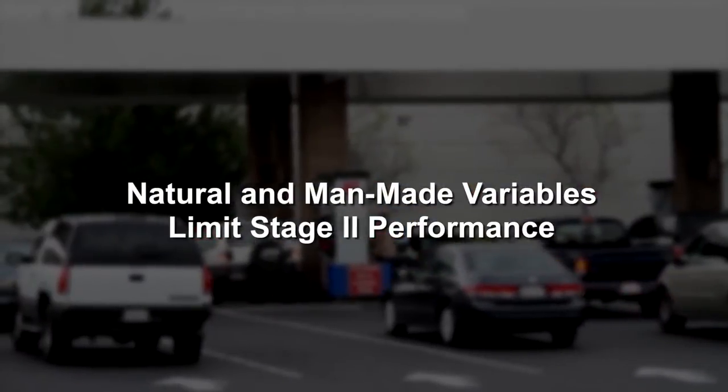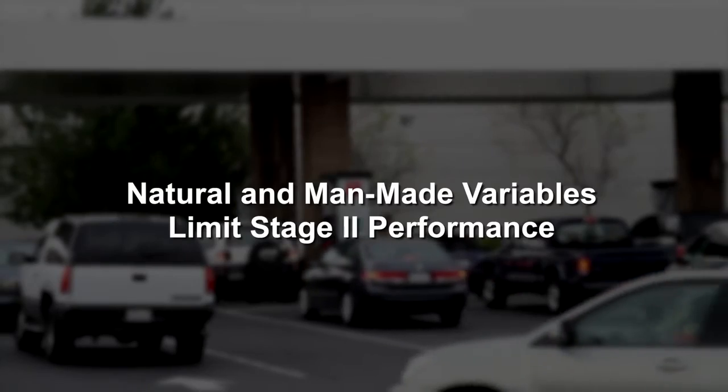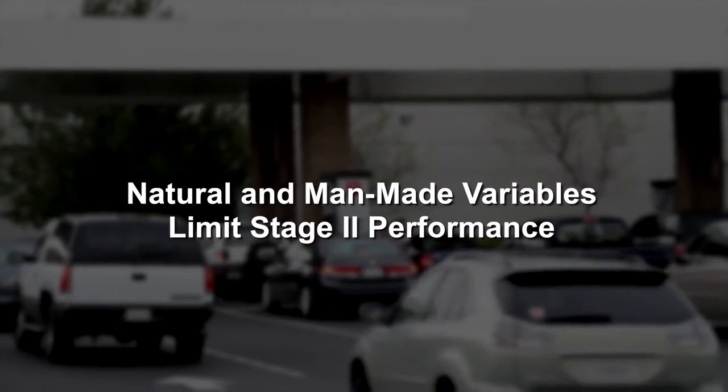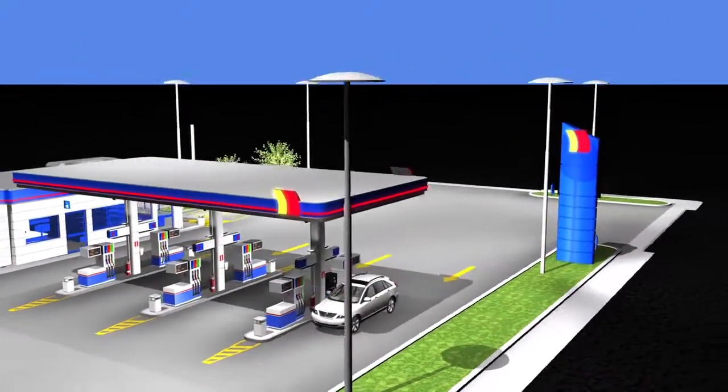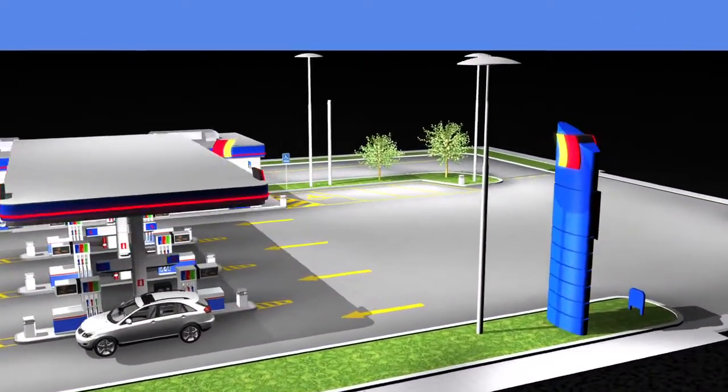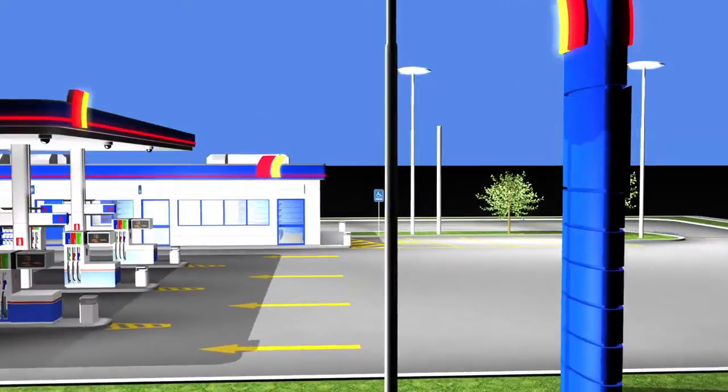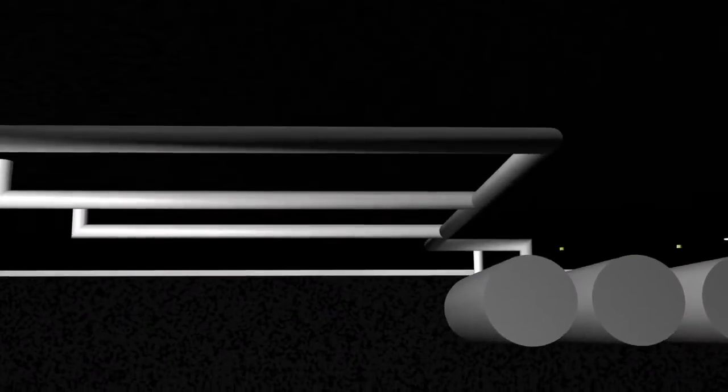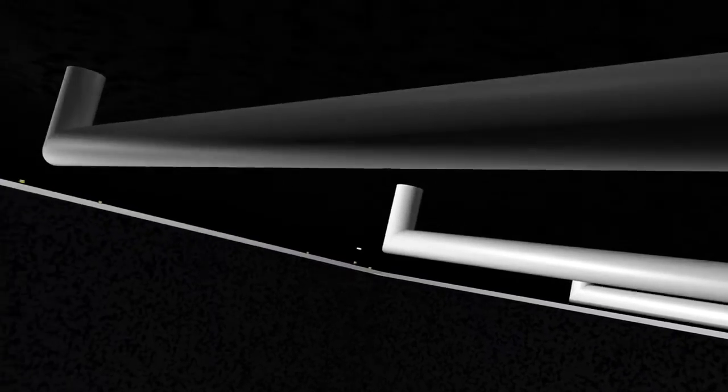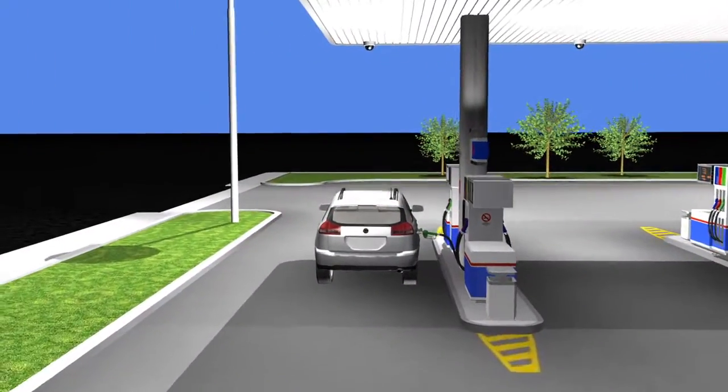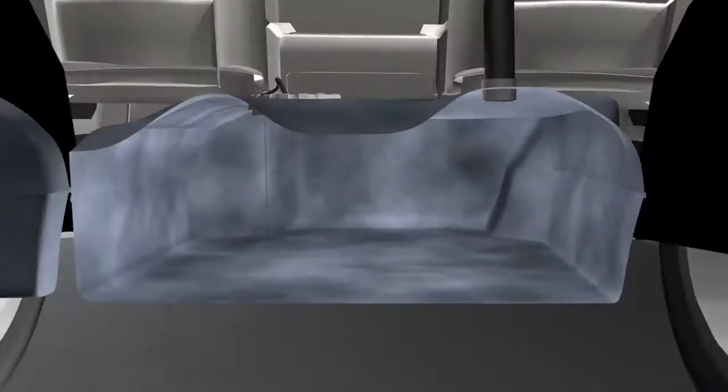This is a gasoline dispensing facility or GDF. The components are rather simple. Fuel dispensers are connected by fuel lines to gasoline storage tanks below ground. When a car is refueled, the fuel dispenser activates a pump, sending gasoline out of the storage tank through a flow meter in the dispenser and into the fuel tank of the vehicle.